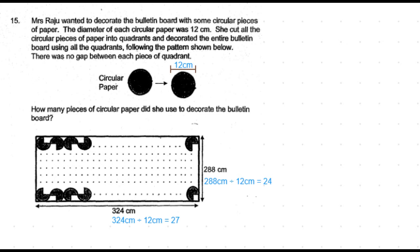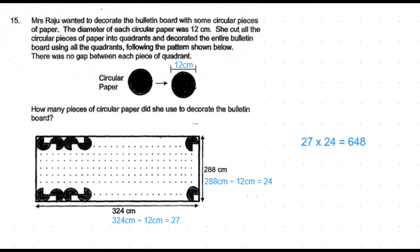That is a total of 27 times 24 equal to 648 circular papers.